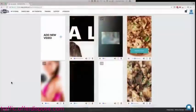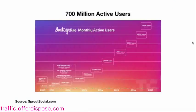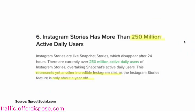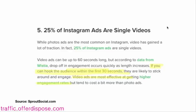Now the question is, why is this so important? Why Instagram? Why Instagram stories, and why mobile devices? Well, Instagram has 700 million active users that you can reach with your video ads. More importantly, Instagram stories right now has 300 million active users. 70% of businesses are using Instagram in 2017, and it's going to be even more in 2018. 25% of Instagram ads are single videos. And it says it's really important that you hook your audience in the first 30 seconds — and that's exactly what our software does. It helps you create videos for mobile devices that hook your audience in the first 15 to 30 seconds.